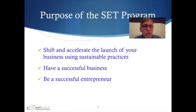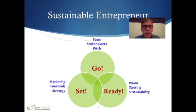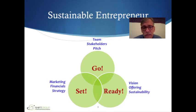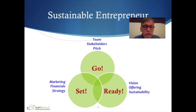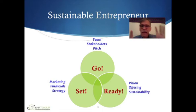This slide covers three major parts of our program. The first part is the Ready Circle in the bottom right, and in the Ready Circle you have three major components: Vision, Offering, and Sustainability. That's where we're starting the course. Then we go to SET, then GO. Those are essentially our first three classes. Then we go into Detail and Marketing, Detail and Finance, Detail and Strategy, and back and forth between that and sustainability. The final part of the course is going to be about building your team and stakeholders and presenting or pitching your business idea. The sustainable entrepreneur has to understand these moving parts, understand how everything fits together, and integrates it successfully into their business.